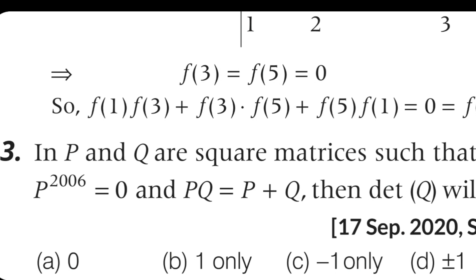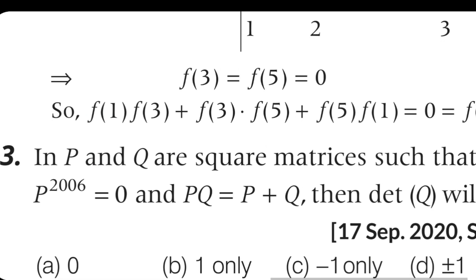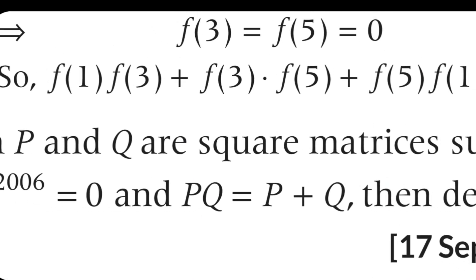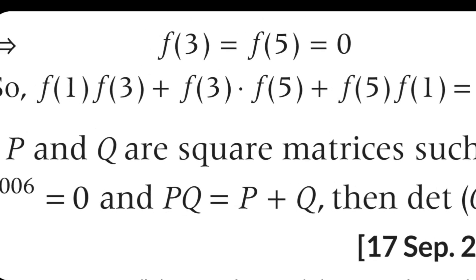Next question: if P and Q are square matrices such that P to the power 2006 equals 0 and P times Q equals P plus Q, then what will Q be? The answer is that Q equals 0.